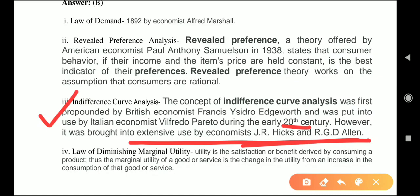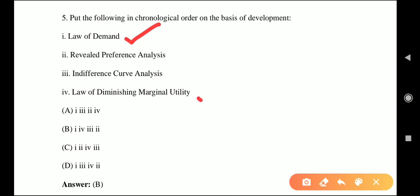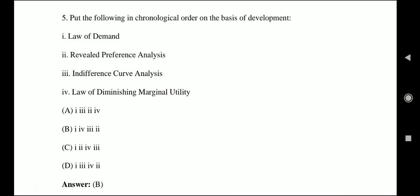The law of diminishing marginal utility came around 1921 and was given by Carlo. It states that the utility derived from each additional unit goes on declining. So the chronological order is: first, law of demand (1892 Marshall); second, law of diminishing marginal utility (1921); third, indifference curve analysis (early 20th century); and fourth, revealed preference theory (1938 Samuelson) — the latest one.